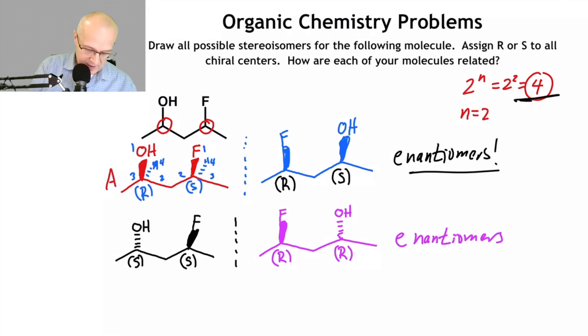So A is related to C and D as a diastereomer. B is related to C and D as a diastereomer. C is related to A and B as a diastereomer. D is related to A and B as a diastereomer. That's how it works.